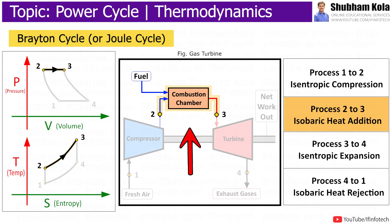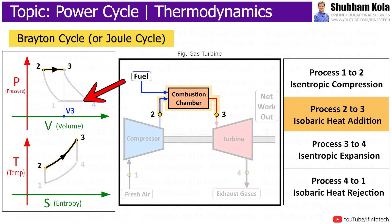Process 2 to 3 is an isobaric heat addition process in the heat exchanger. During this phase, heat is transferred to the gas from an external source at constant pressure. An increase in volume happens due to heat addition, and since it is a heat addition process, the temperature of the gas increases.